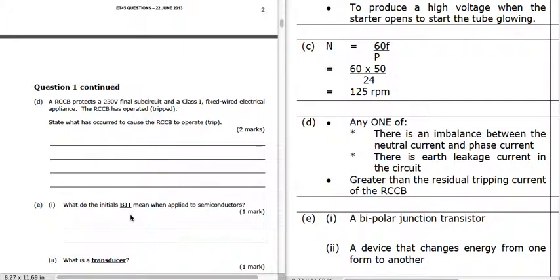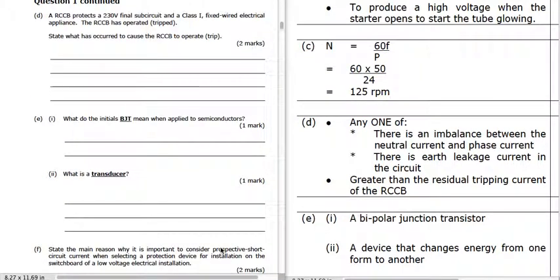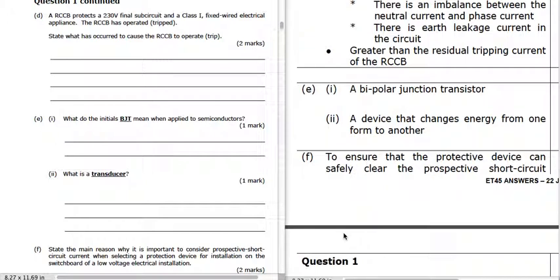BJT is a bipolar junction transistor — that's our normal transistor. A transducer is something that changes one form of energy to another.